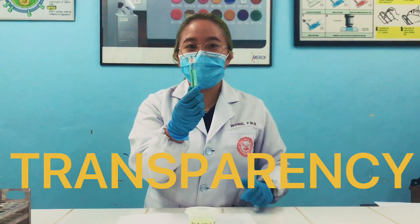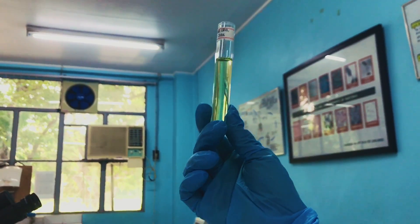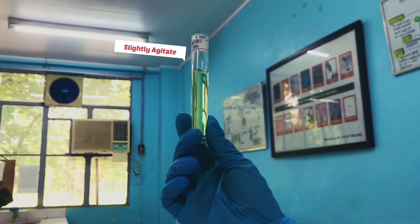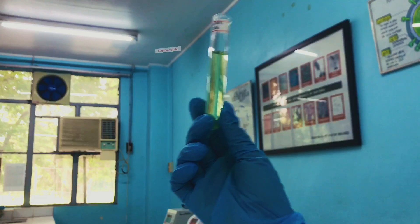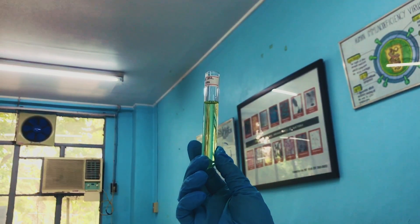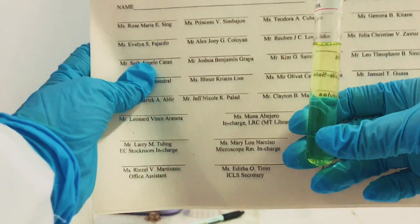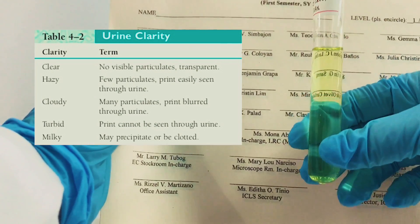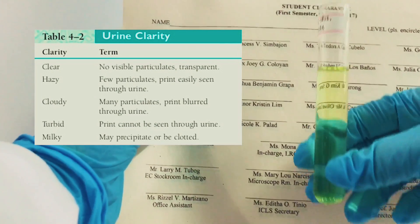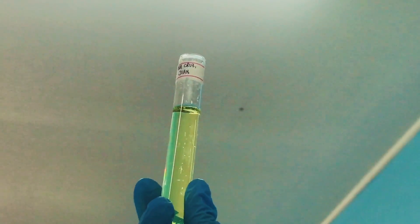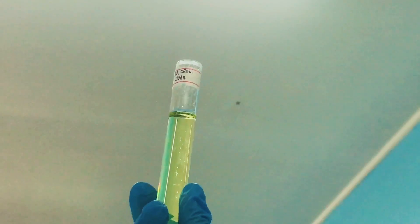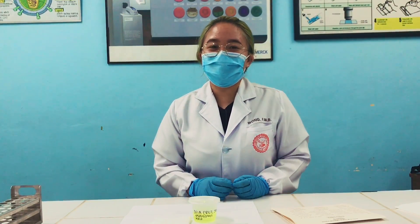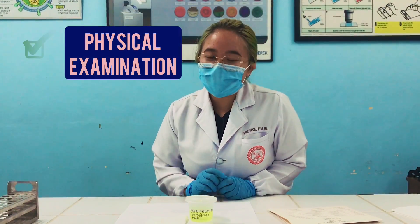Next, we'll determine its transparency or clarity. To do that, hold the test tube at the bottom part and slightly agitate it to know whether there are particulates floating. If there are none, report it as clear. If there are, get a printed material and hold it against the tube to determine the level of transparency. For this urine, its transparency is clear. That concludes the first part of your analysis, which is the physical examination.